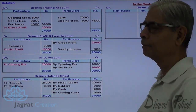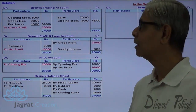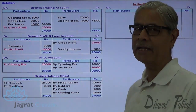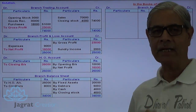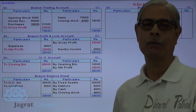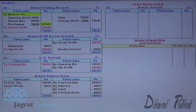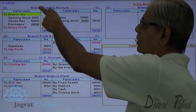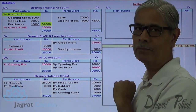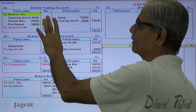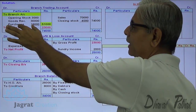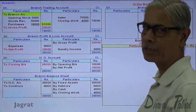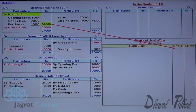This trading account is to be absorbed by HO. Journal entries are recorded and the titles are posted in light of that. First of all, branch trading account debit 51,000.